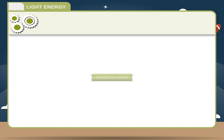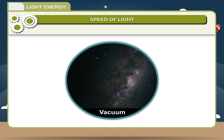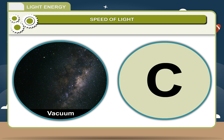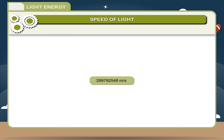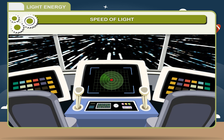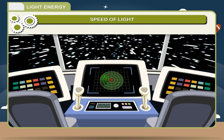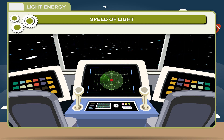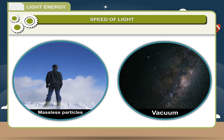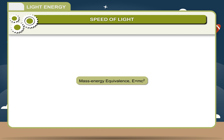Speed of Light: The speed of light in vacuum, commonly denoted by C, is a universal physical constant important in all areas of physics. Its exact value is 29 crore 97,92,548 meters per second, approximately 3 × 10⁸ meters per second. According to special relativity, C is the maximum speed at which all matter and hence information in the universe can travel. It is the speed at which all massless particles and changes of the associated fields travel in vacuum. It appears in the famous equation of mass-energy equivalence: E = mc².